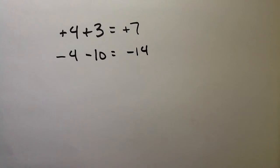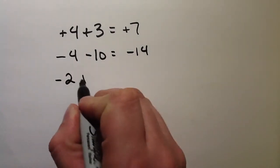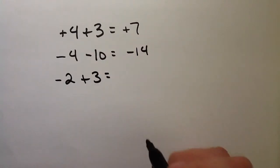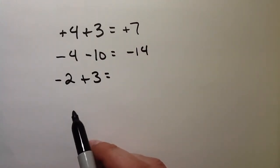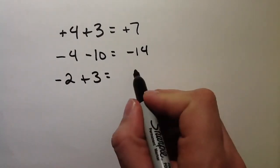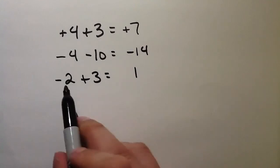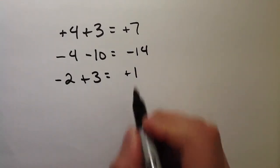So now let's go over what happens when we have different signs. Minus 2 plus 3 equals. Now we have different signs. When we have different signs, I want you to subtract both numbers. 3 minus 2 is 1. Which number has the bigger sign? Well, the 3, so that equals a positive 1.